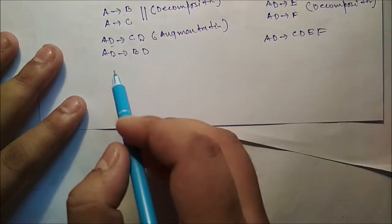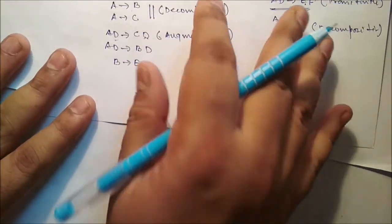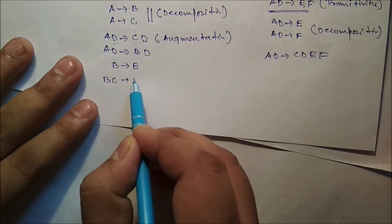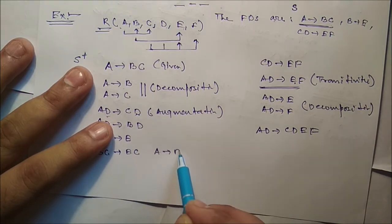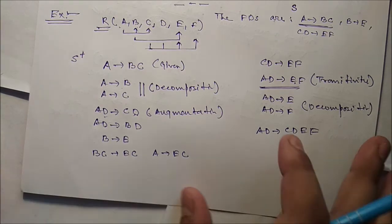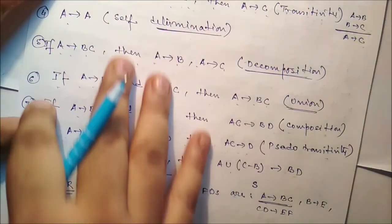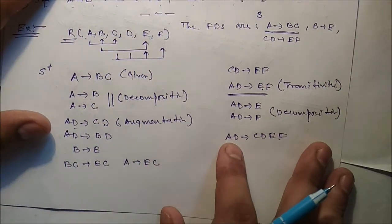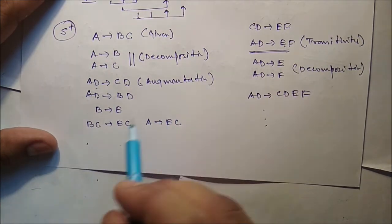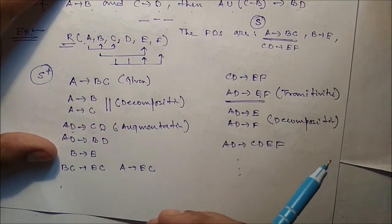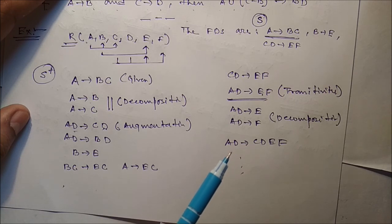From B→E, by augmentation: BC→EC. And since A→BC, by transitivity: A→EC. In this way we can identify various functional dependencies by repeatedly applying the inference rules to the given FDs. That is how we compute the closure S+ of a given set S of FDs — by applying rules until they stop producing new FDs.